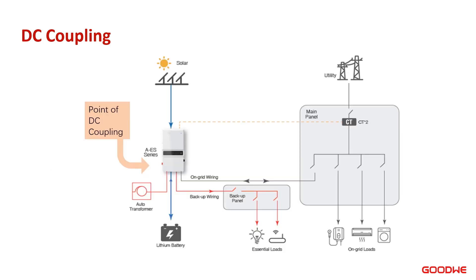Here is an example of DC coupling. In this case, the solar input and the battery connection are through the central hybrid inverter, acting as the point of DC coupling, and therefore this is a DC coupled system.